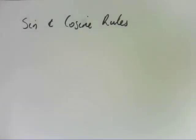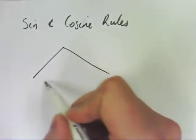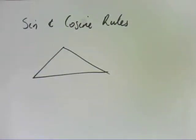These sine and cosine rules are not to be confused with the trigonometric ratio sine equals opposite over hypotenuse and cosine equals adjacent over hypotenuse. These are different. These are for non-right-angled triangles, whereas the SOHCAHTOA is only for right-angled triangles.